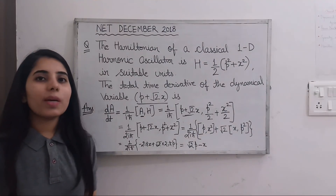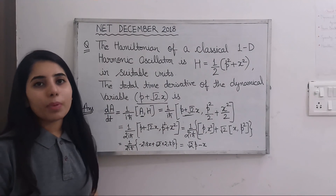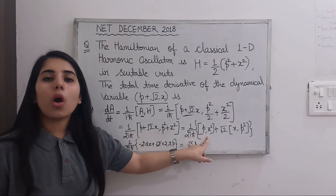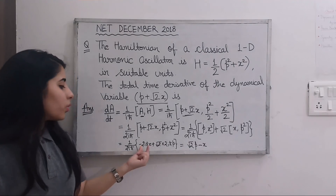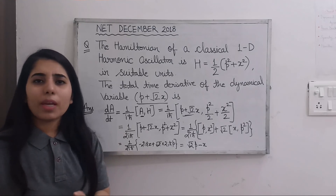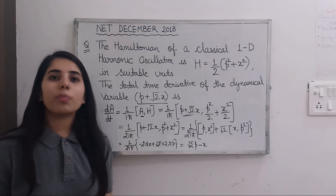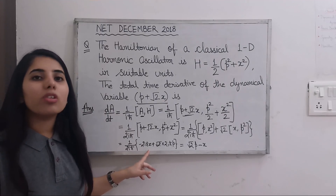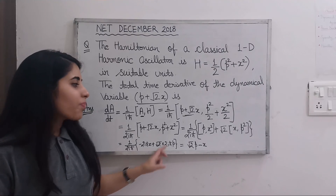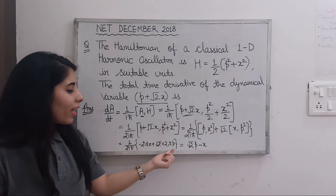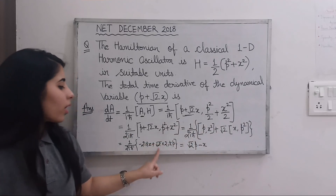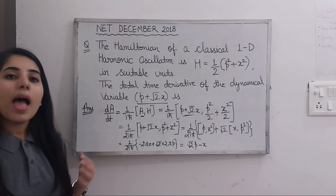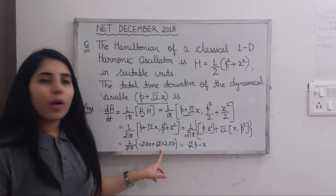For [x, p²], we get 2iℏp. The √2 is already present as a coefficient, so we have √2 × 2iℏp at that term. When we take 2iℏ common from both terms, we get (2iℏ)/(2iℏ) which cancels out, leaving us with −x from the first term and √2p from the second term.